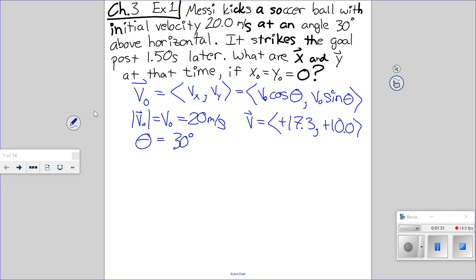Okay, so we resolved our vector into X and Y components. It's kicking up at an angle, we've got horizontal and vertical. It strikes the goal post 1.5 seconds later, what are X and Y at that time, the X and Y position, if I start it, the ball is kicked at position zero, and time equals zero.